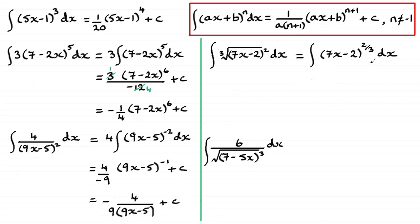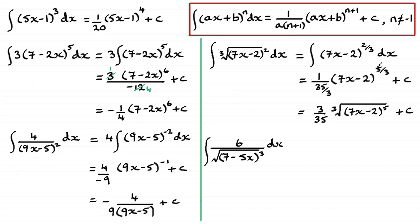Now dealing with roots: I add 1 to the power of 2 thirds. Adding 3 thirds to 2 thirds gives 5 thirds. So it becomes 7x minus 2 to the power 5 thirds. Then I do 5 thirds times 7, which is 35 thirds, and divide by 35 thirds. Multiplying top and bottom by 3 gives 3 over 35. The answer can also be expressed as 3 over 35 times the cube root of 7x minus 2 all to the power 5, plus c.